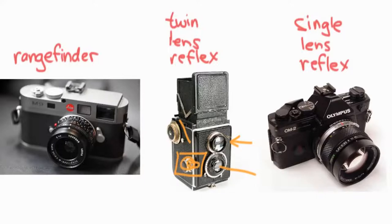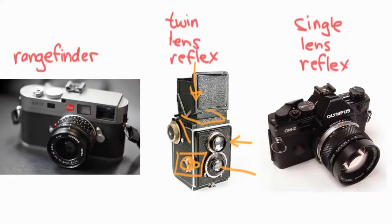The picture is not being taken through the top lens — through that one you're just getting a preview, trying to see the same image that the bottom lens is seeing. The person using the camera holds it at stomach level, looking down into a viewfinder that points up toward you, flat like the screen on a digital camera.